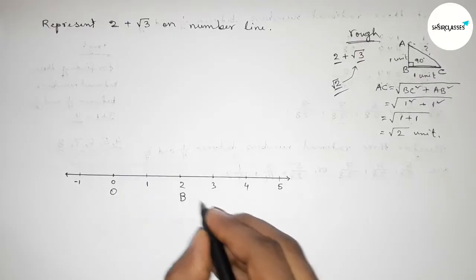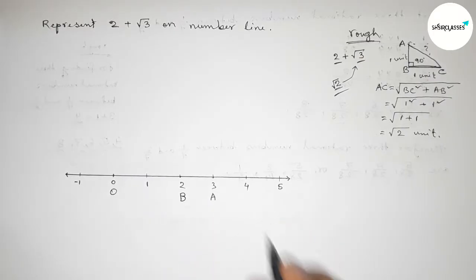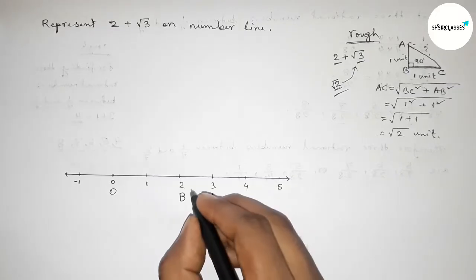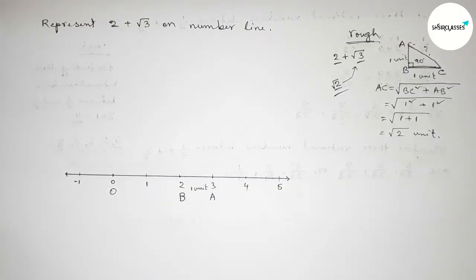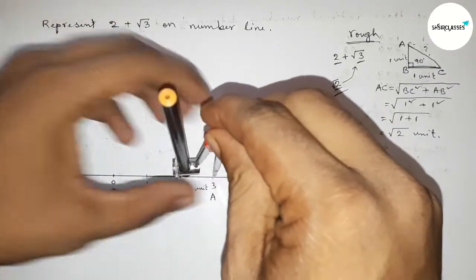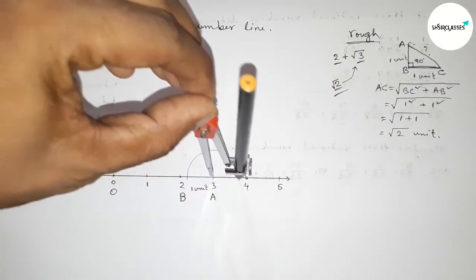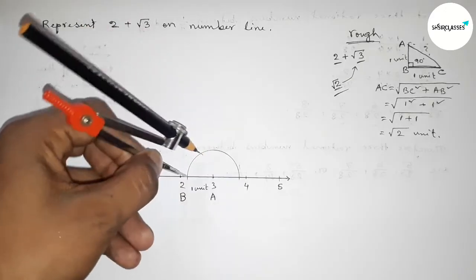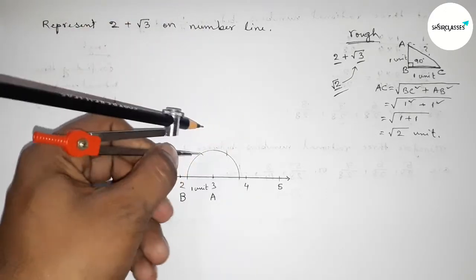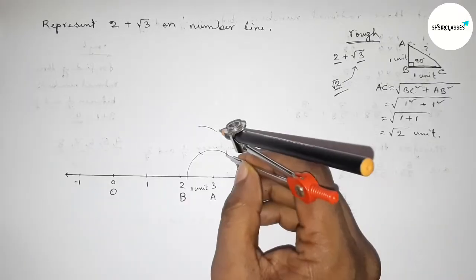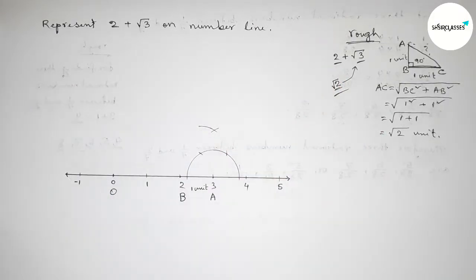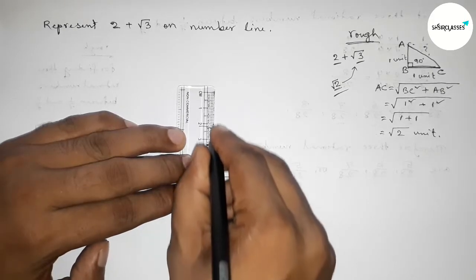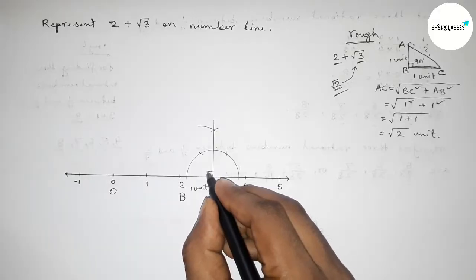Taking point B at 2 and point A at 3, so BA is 1 unit length. Now drawing a 90 degree angle at point A using a compass: taking any length, drawing an arc, then putting the compass at that point, taking the same length and cutting. Repeating with the same length to get a 90 degree angle at point A.